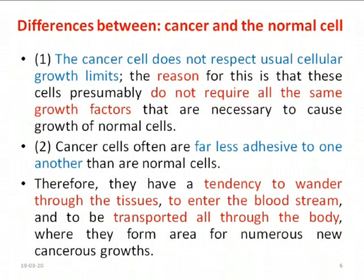Second, cancer cells are often far less adhesive to one another than normal cells. Normal cells are more cohesively and tightly bonded, but cancer cells are not. Therefore, they have a tendency to wander through tissues, enter the bloodstream, and be transported throughout the body — moving from one organ to another, where they can grow as tumors.